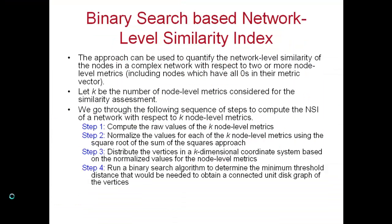We are going to look at the binary search based method for quantifying the network level similarity. This approach can be used to quantify the network level similarity of nodes in a complex network with respect to two or more node level metrics. You need at least two metrics to use this approach. The advantage is that nodes can have all zeros in the metric vector, unlike the quasi-similarity based approach where a node cannot have all zeros in the feature vector.